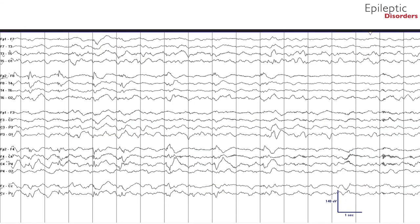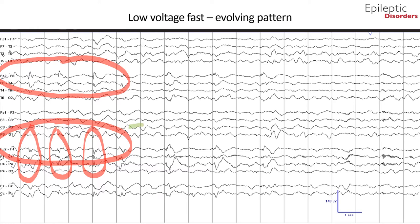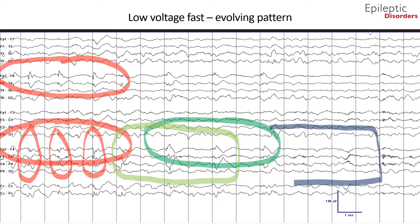In the last page of this seizure shown in bipolar montage, you can see in the beginning well-formed epileptiform discharges over the right frontal region where the previously noted low-voltage fast frequency activity was. Also noted are poorly formed epileptiform discharges in the middle half of the page with a blunted appearance, more representative of slowing.